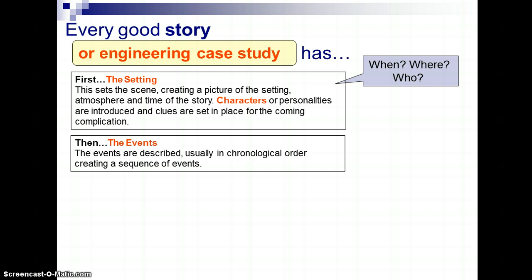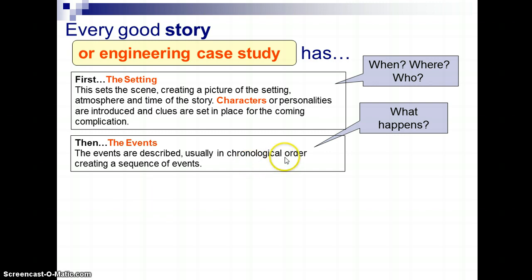Next, we pay attention to the events. What happens in the story? And this is usually told in chronological order — in other words, what happened first, second, and so on — and then it creates a sequence of events.